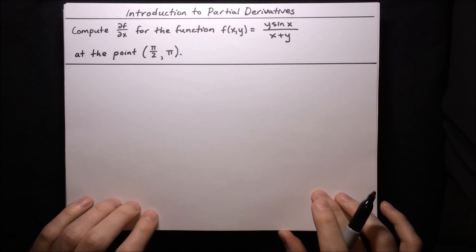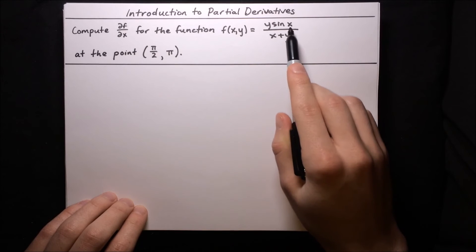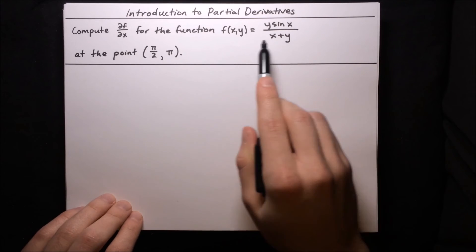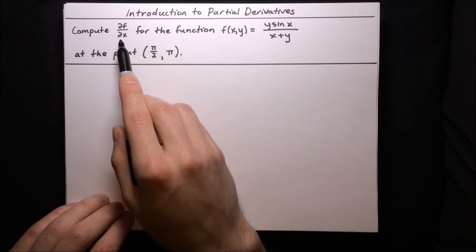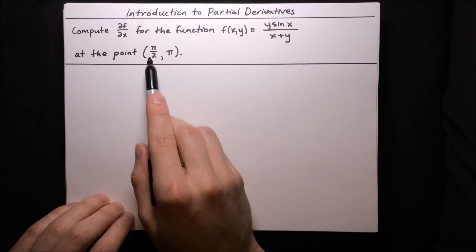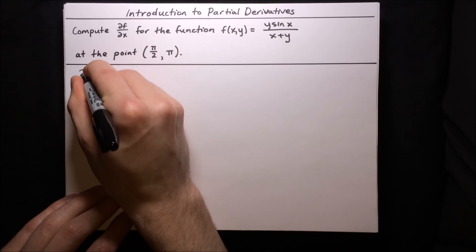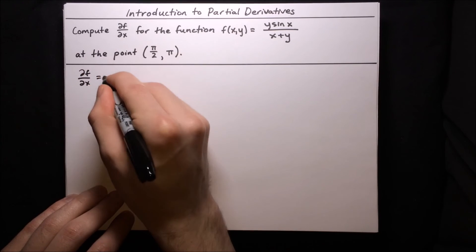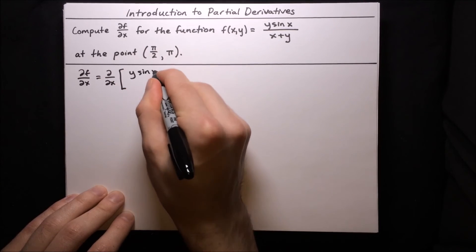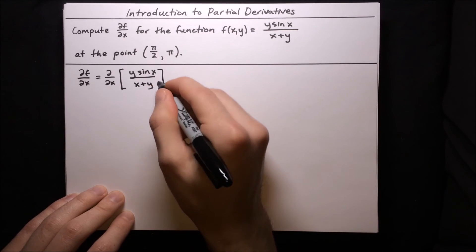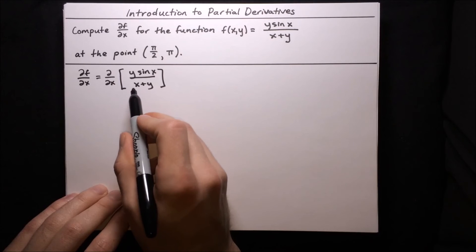Here's our last example. We want to compute the partial derivative with respect to x of f(x, y) = y·sin(x)/(x + y), evaluated at the point (π/2, π). We'll first take the partial derivative, then plug in the point afterward. Since this is a quotient with x in both numerator and denominator, we'll need to use the quotient rule.